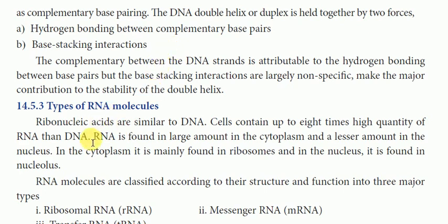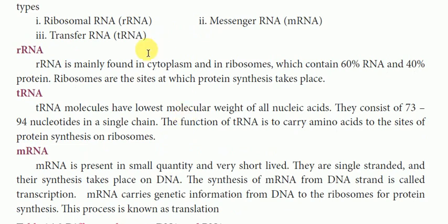Now, types of RNA molecules. Ribonucleic acids are similar to DNA. Cells contain up to eight times the quantity of RNA than DNA. RNA is found in large amounts in the cytoplasm and lesser amounts in the nucleus, mainly in the ribosomes. RNA molecules are classified into three major types: ribosomal RNA (rRNA), messenger RNA (mRNA), and transfer RNA (tRNA).